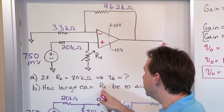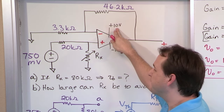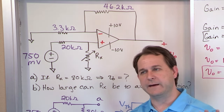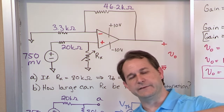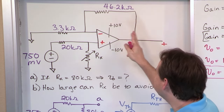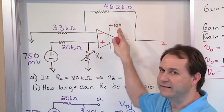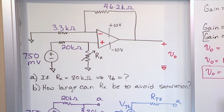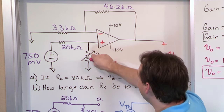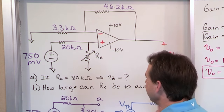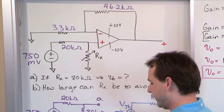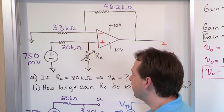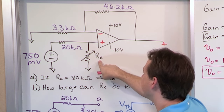What the problem is asking is: what is the maximum value of R_X that just brings the output up to 10 volts? Because the output is always going to be positive — with a positive input in a non-inverting configuration, you only have to worry about saturating at plus 10 volts. The mathematically rigorous way to do this is to recalculate the Thevenin equivalent source voltage at various values of R_X by letting R_X vary.